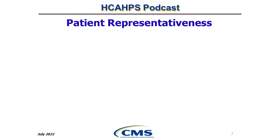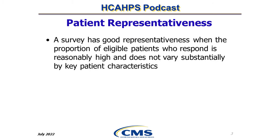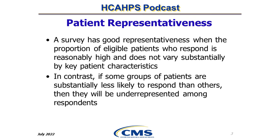A survey has good representativeness when the proportion of eligible patients who respond is reasonably high and does not vary substantially by key patient characteristics, like race, ethnicity, age, or language spoken at home. In contrast, if some groups of patients are substantially less likely to respond than others, then they will be underrepresented among respondents.